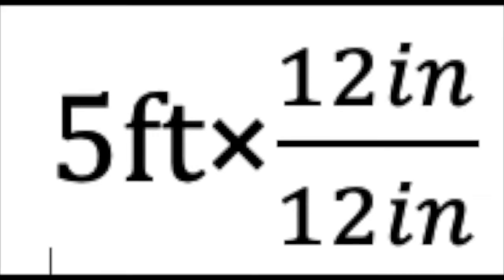So you could always take that five feet and multiply it by one. That doesn't change the quantity. It's just multiplying it by one. Even if I write that one is 12 over 12 or 12 inches over 12 inches, I'm not changing the quantity. I'm just multiplying it by one because the top of the fraction is equal to the bottom.